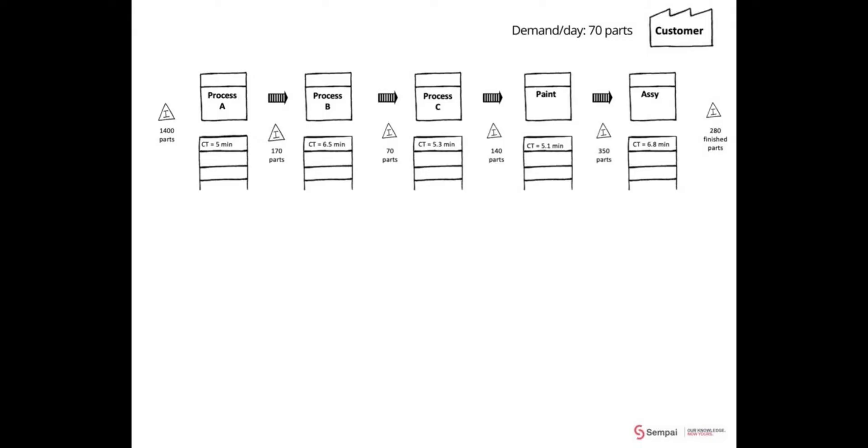We have the processes pulled out: A, B, C, paint, and assembly. We've got the customer in the top right, which is important because we have to convert inventory into time, and we do that by knowing that one day's demand is 70 parts.